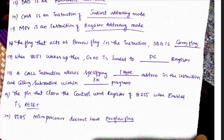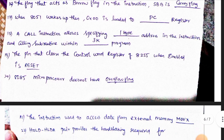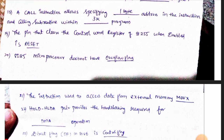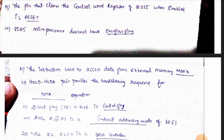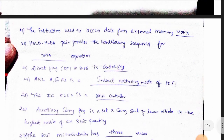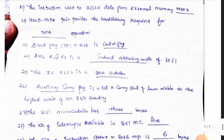The flag that acts as a borrow flag in subtraction instructions is the carry flag. The CALL instruction uses a one-byte address and supports a 3K program. The pin that clears the control word register of 8255 when enabled is the reset pin. The 8085 does not have an overflow flag. The instruction used to access data from external memory is MOVEX. The HOLD or HLDA pair provides the handshaking required for DMA operation.